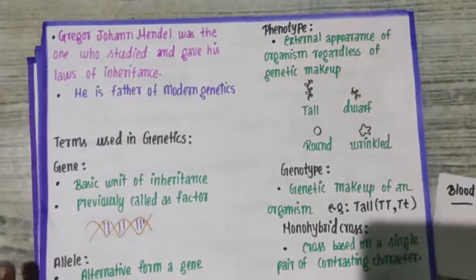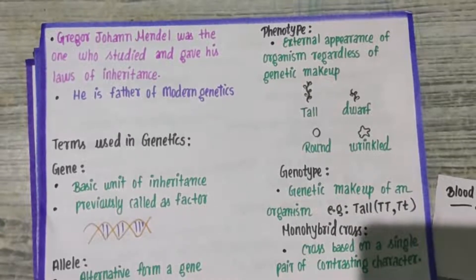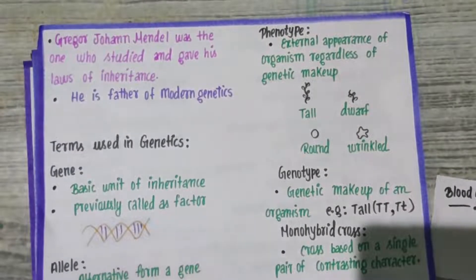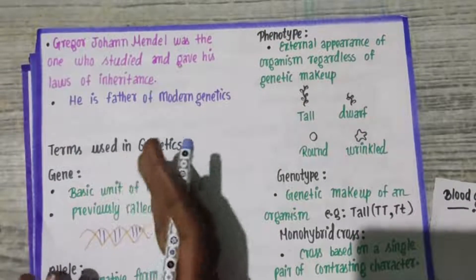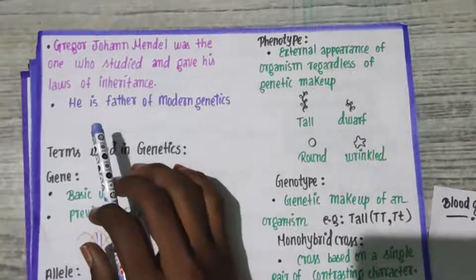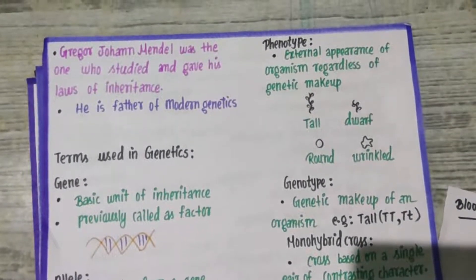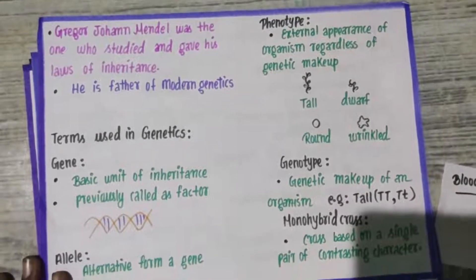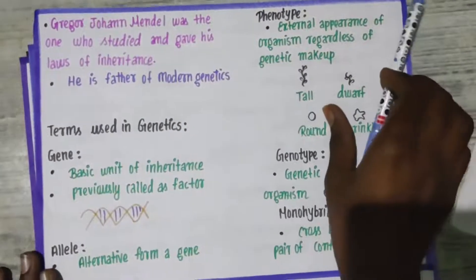Hello students, welcome to SHIFTO. Now we are going to start with the terms used in genetics. We have to know who is the father of modern genetics — he is none other than Gregor Mendel. He gave us a law regarding genetics, known as the law of inheritance. Inheritance is the process of transmission of characters from parents to the young ones in the next generation.